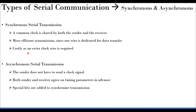Serial communication is broadly divided into two classes: synchronous and asynchronous. In synchronous serial transmission, there is a common clock shared between sender and receiver. A clock line goes from transmitter to receiver — that's a very important aspect. It is more efficient since one wire is dedicated for data and another for clock, but it costs an extra clock wire.